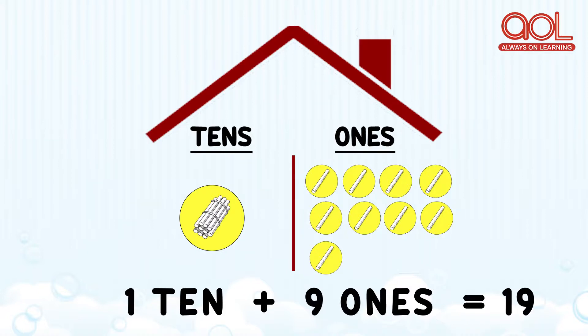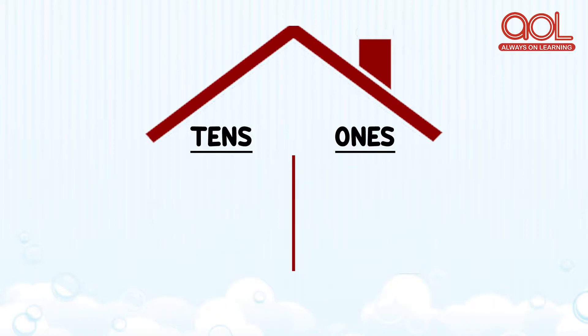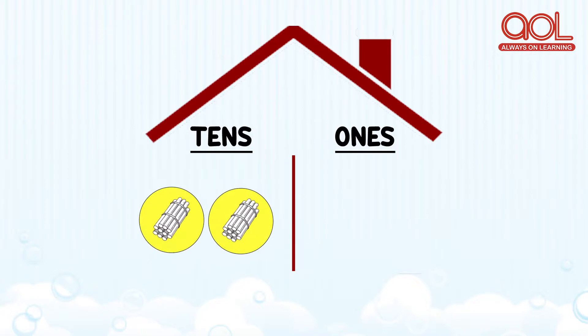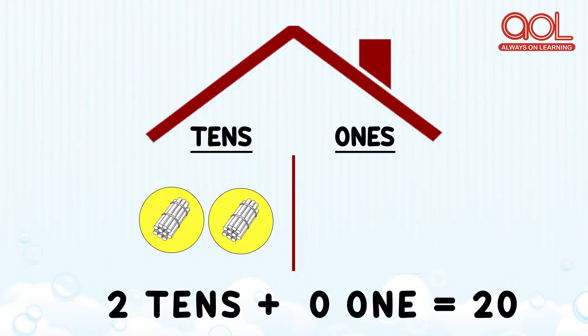Kids, in the tens house we have two tens, and in the ones house we have nothing. Two tens and zero ones makes number twenty. Hope you must have enjoyed learning about building up numbers.